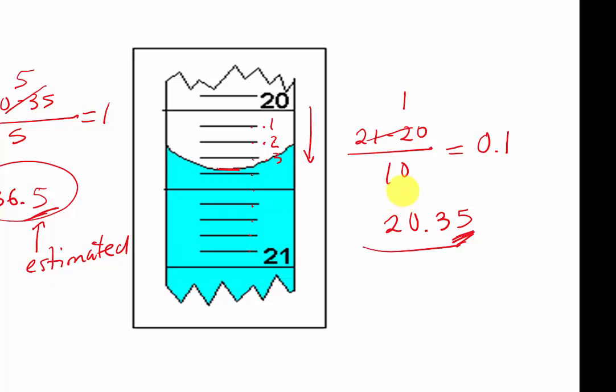But it is about every individual digit. For instance, we have 20. We can prove that 20 is there. We have 0.3. We can prove that 0.3 is there. But we have to estimate, which is 5 and a half of 1. We have to estimate. And that is our answer.